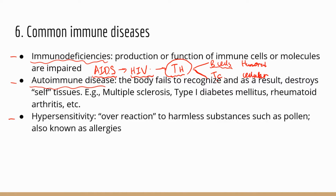The second group of conditions are autoimmune diseases. In the case of an autoimmune disease, for various reasons the body fails to recognize its own tissues, and as a result the body thinks these self tissues are foreign invaders. So the body mounts an immune response against these self tissues.